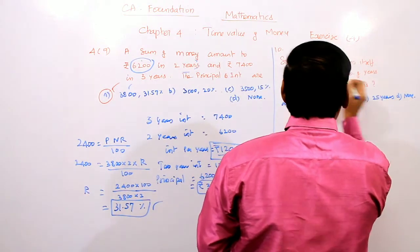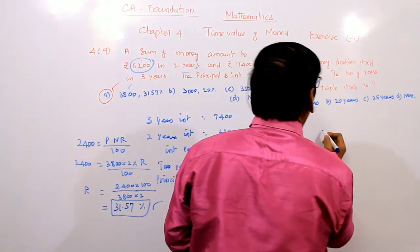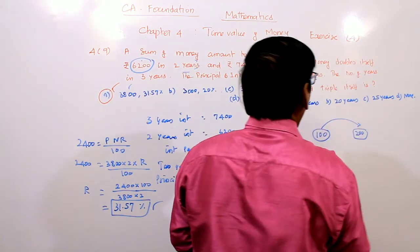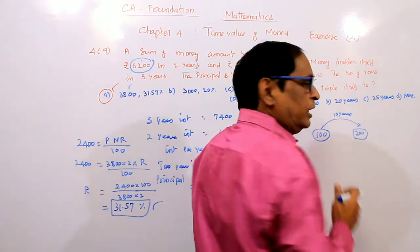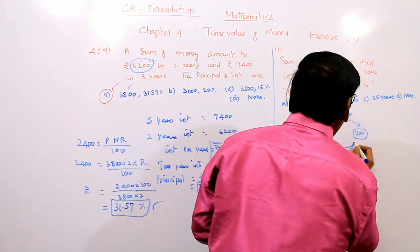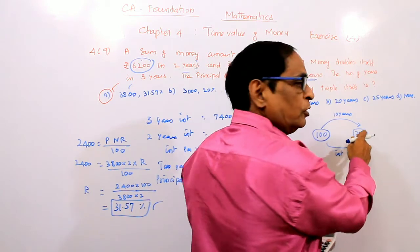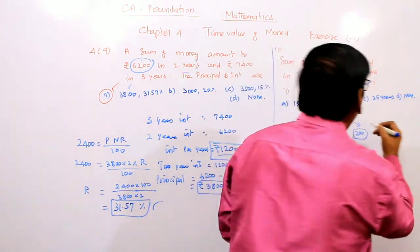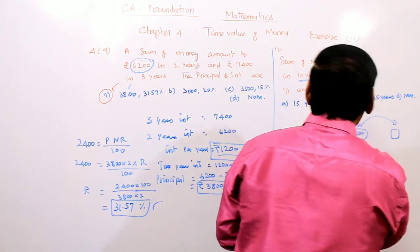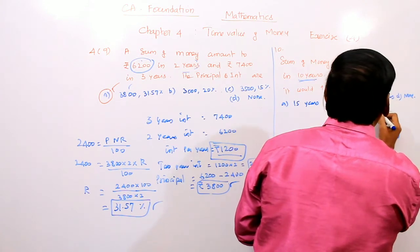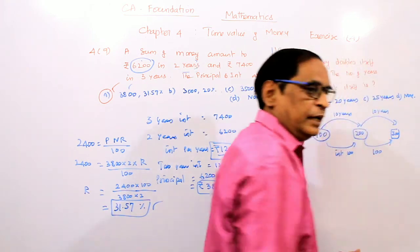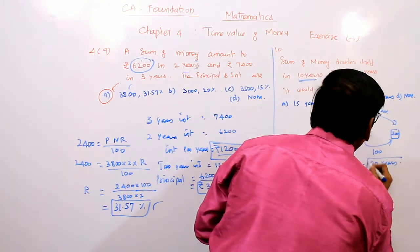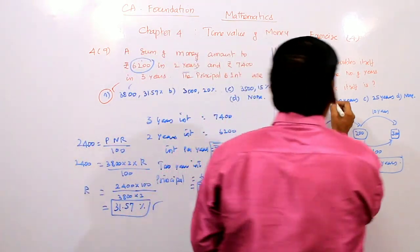Next: A sum of money doubles itself in 10 years. Assume principal = 100, so amount = 200, and interest = 100. Using SI formula: 100 = 100 into R into 10 divided by 100, giving R = 10%. The answer is B. You can do this exercise.